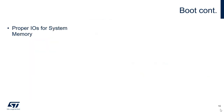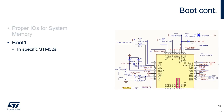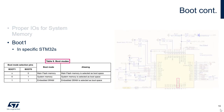Each STM32 family is unique and may have different mappings for system memory. Therefore, it is imperative to double-check that you are using the proper IOs for system memory. Another point to consider is that some STM32 devices may have a boot1 pin and fixed boot addresses. For example, the STM32F103 has both a boot0 and boot1 pin, and the combination of these two pins will determine whether the STM32 boots from main flash memory, system memory, or embedded SRAM. We highly encourage you to refer to your respective STM32 device's reference manual and application note 2606 for further details.